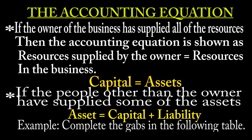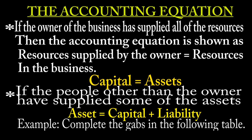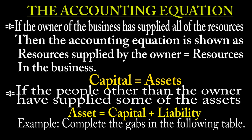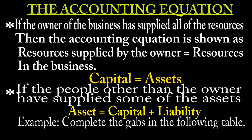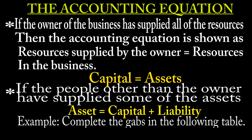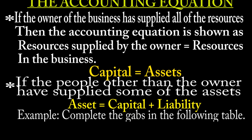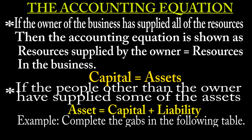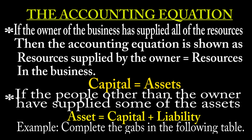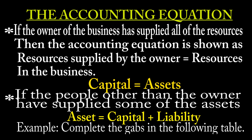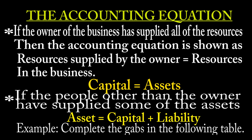The accounting equation comes in two scenarios. The first scenario is if the owner of the business has supplied all of the resources, then the accounting equation is shown as: resources supplied by the owner equals resources in the business, which is capital. The capital you invested is equal to the actual resources you have today in your business, if you are the only source that put the money into the business.